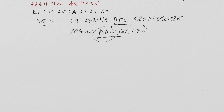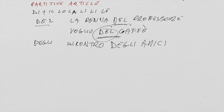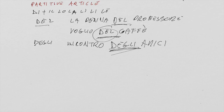The partitive means 'some,' or its meaning could also be an approximate and unspecified number of something, like 'degli' in the sentence 'incontro degli amici' — I meet some friends. You must use the correct form of the partitive in front of the noun that you want to express an unspecified part or number of.